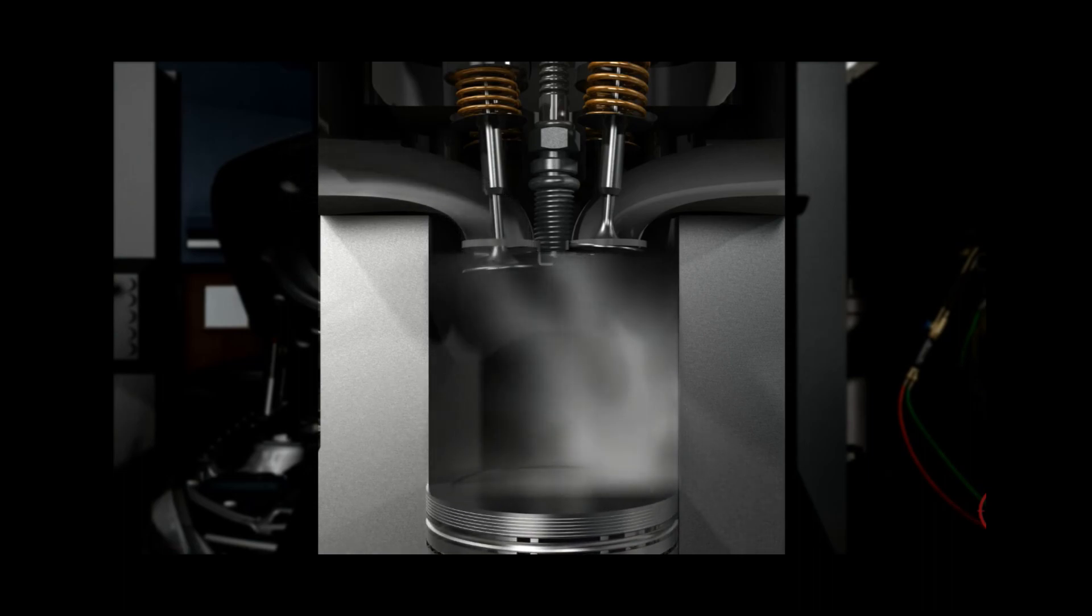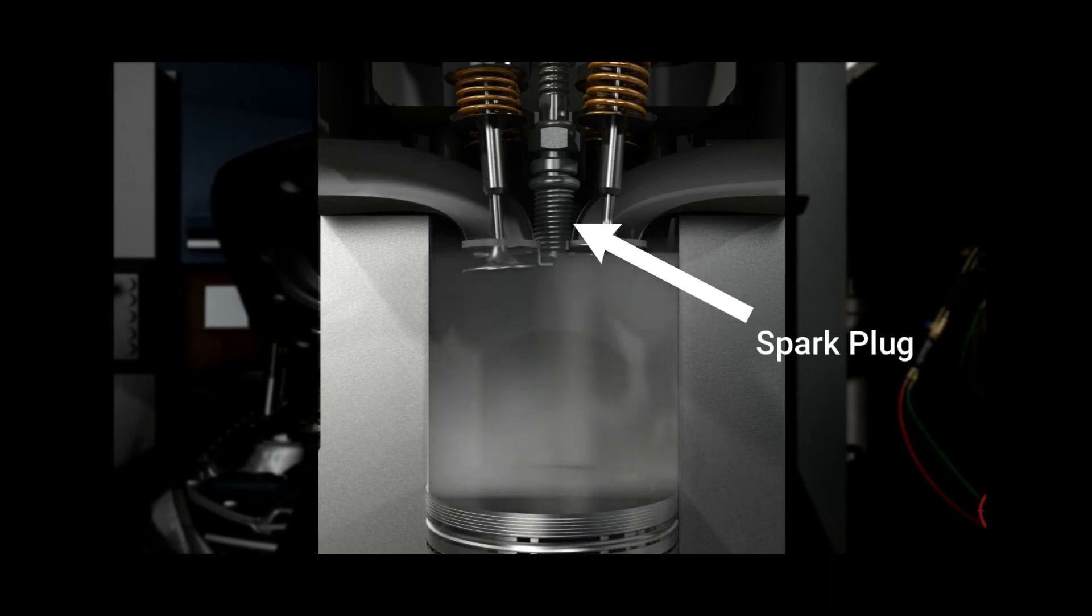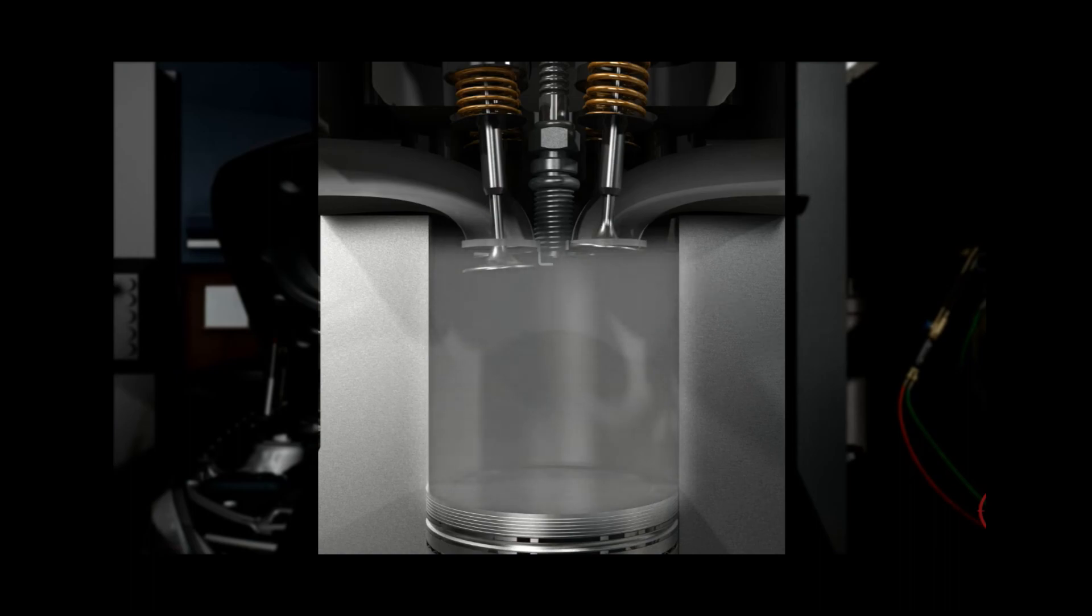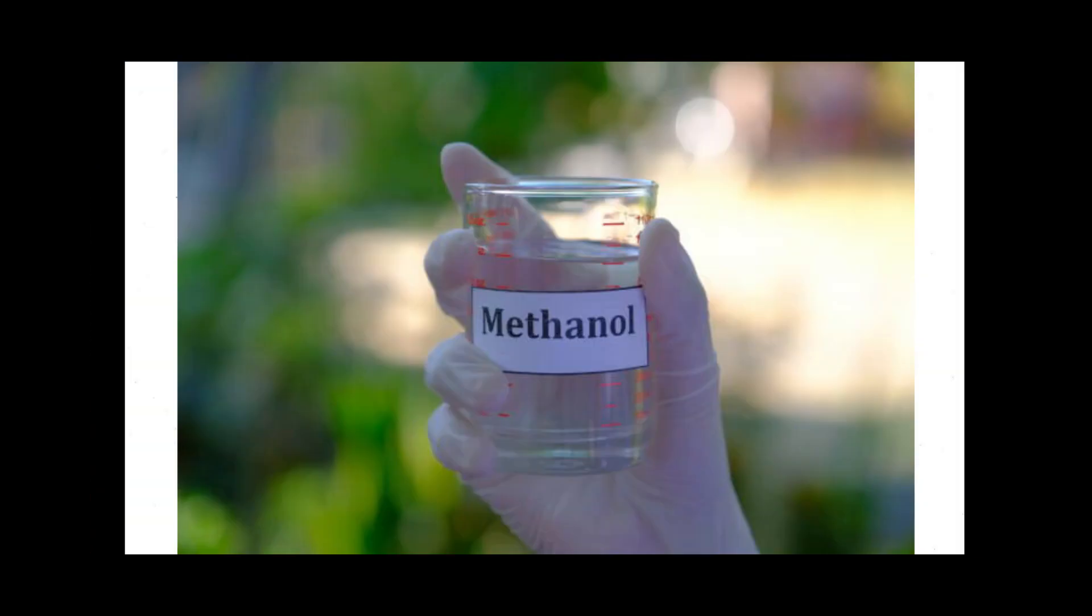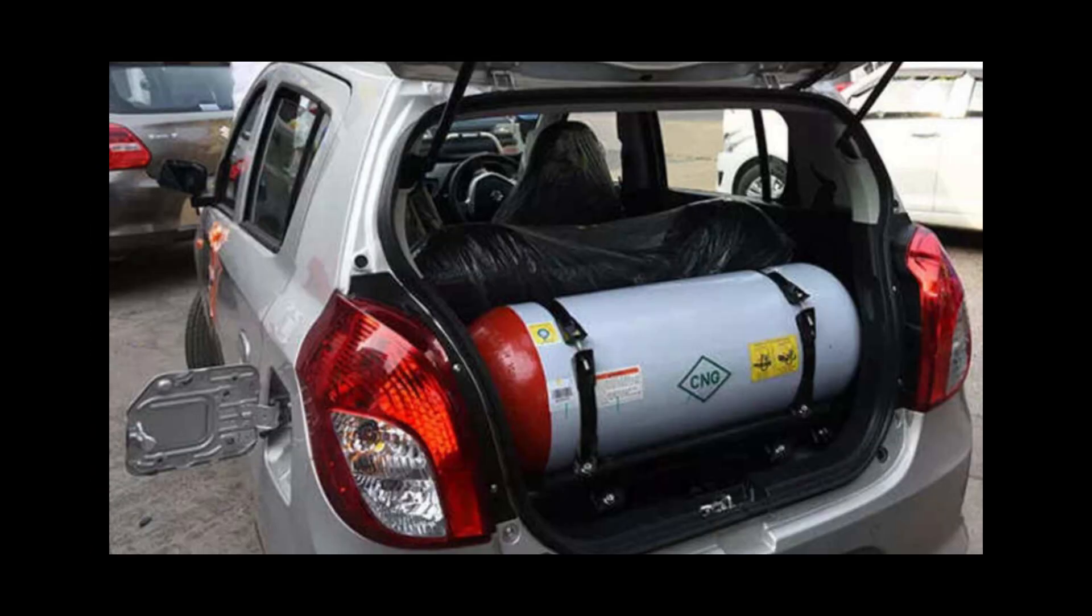All petrol engines are based on spark ignition where a spark plug ignites the combustion of the air-fuel mixture. Even though spark ignition engines are commonly referred to as petrol engines, they can also run on autogas, methanol, bioethanol, compressed natural gas, hydrogen, and nitromethane.